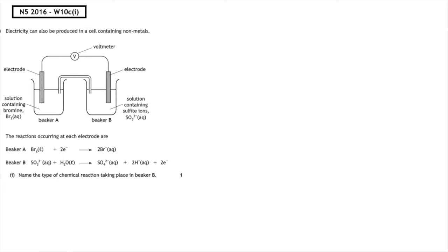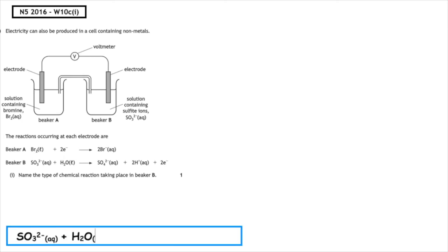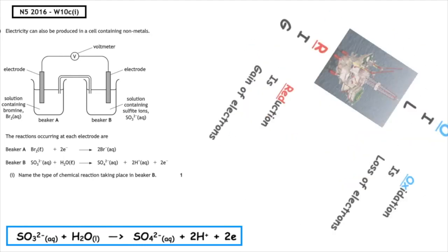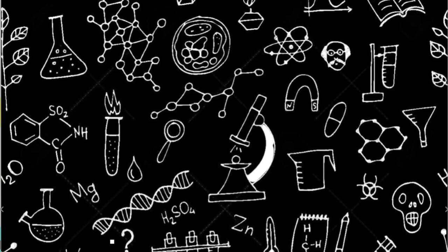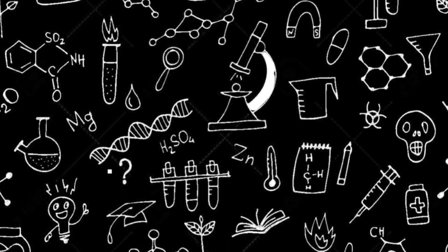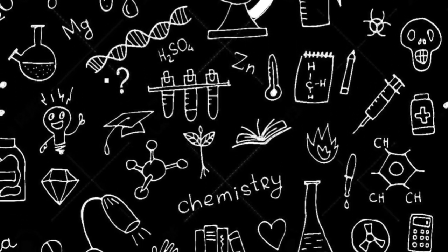Past paper question: National 5 2016, written 10c part 1. Electricity can also be produced in a cell containing non-metals. The reactions occurring at each electrode are given in Beaker A and Beaker B. Name the type of chemical reaction taking place in Beaker B. In Beaker B, the electrons are found on the product side, meaning electrons are being lost — so the type of reaction taking place in Beaker B is oxidation.